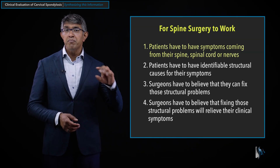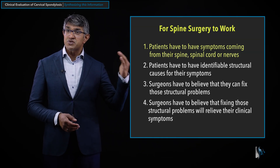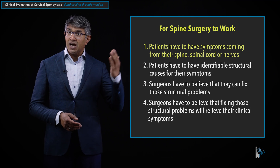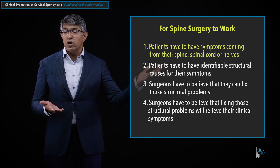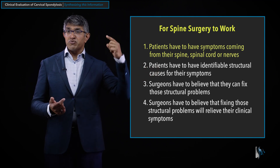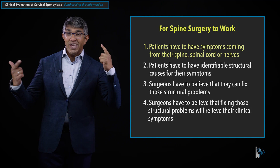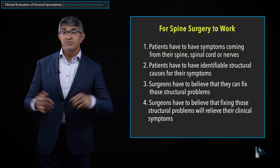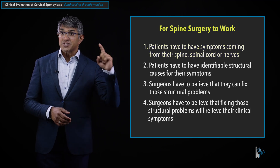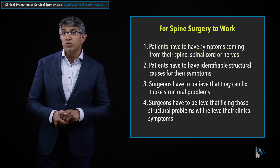Rule number one: patients have to have symptoms coming from their spine, the spinal nerves, or the spinal cord. For spine surgery to work, people's problems need to be coming from their spine. That's a simple way of thinking about it, but it's important rule number one.